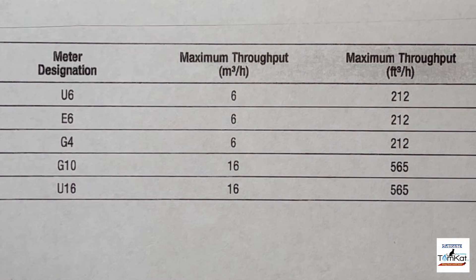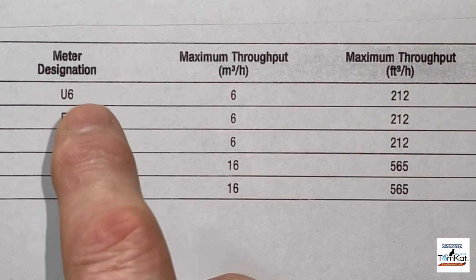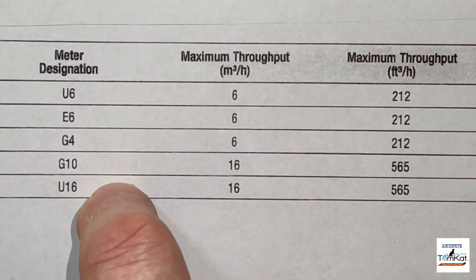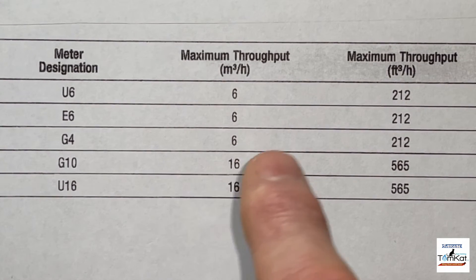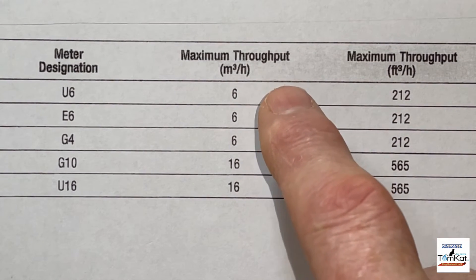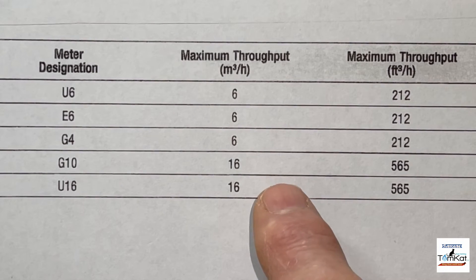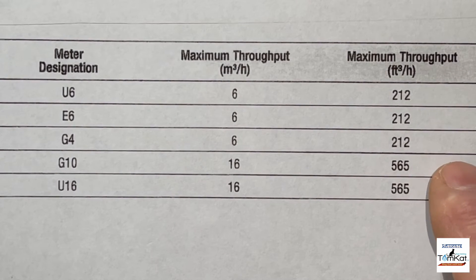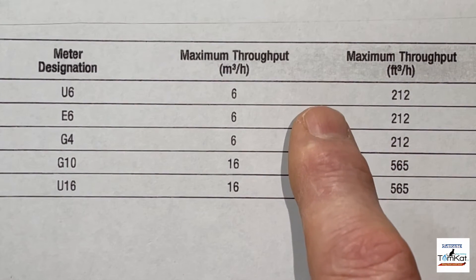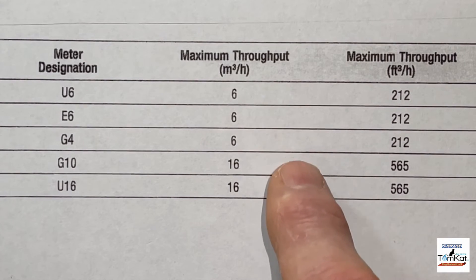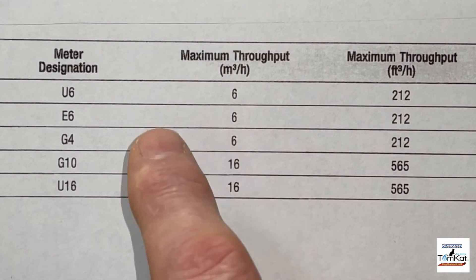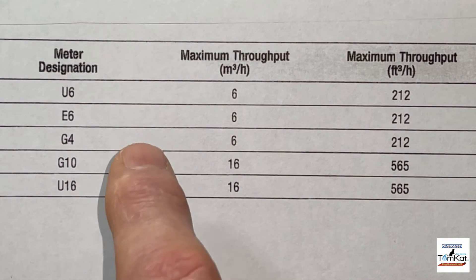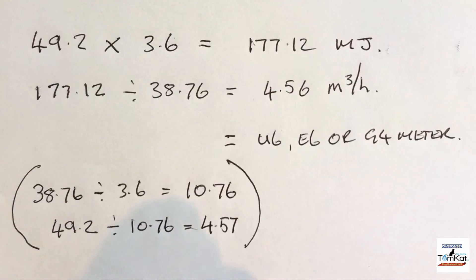Now look at the meter selection chart. As a domestic engineer you can work on U6, E6, G4, G10, and U16 meters. The U6/E6/G4 gives us six meters cubed per hour, the G10 gives 60, and so on. Our result of 4.56 m³/hr is less than six, so we can use a U6, E6, or G4 meter.